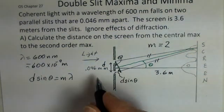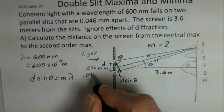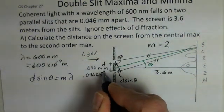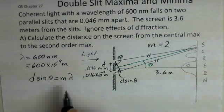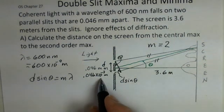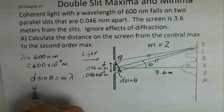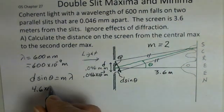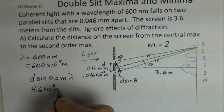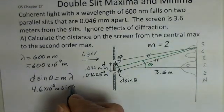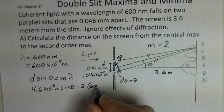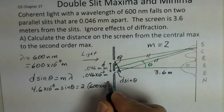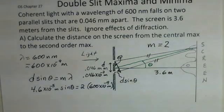d sine theta. d is 0.046 times 10 to the minus 3 meters. Now, I can go ahead and put that in for our calculation, or I'm going to go ahead and put in 4.6 times 10 to the minus 5 meters for the d. d theta is unknown.